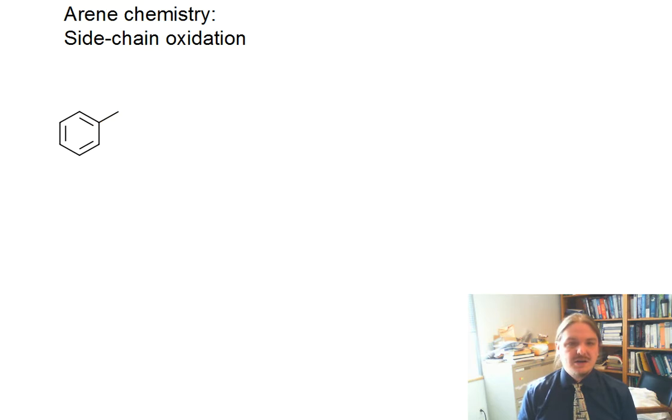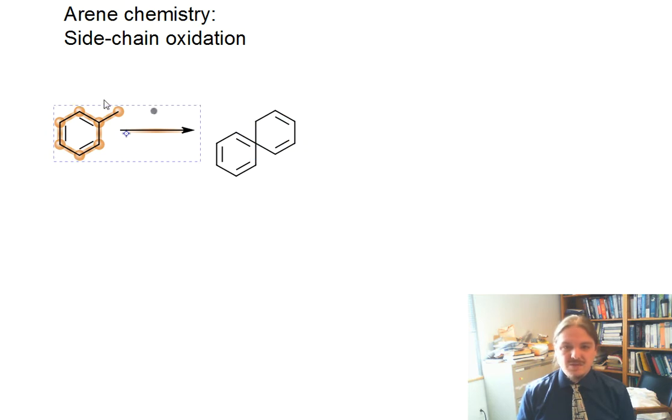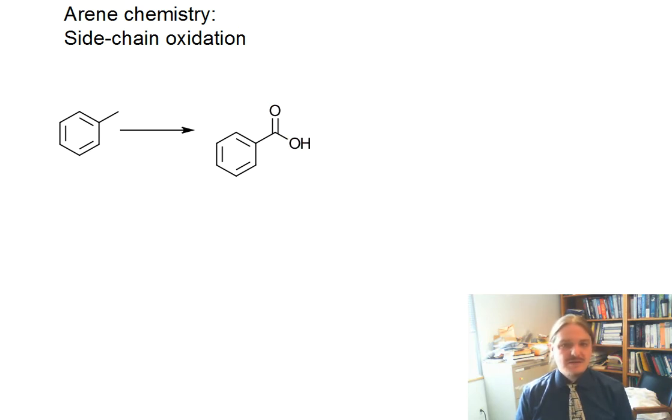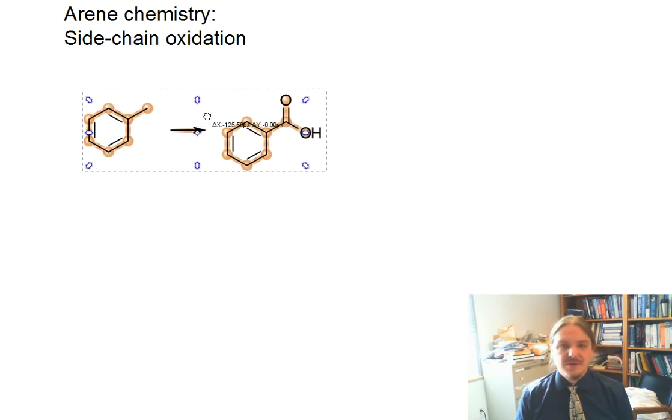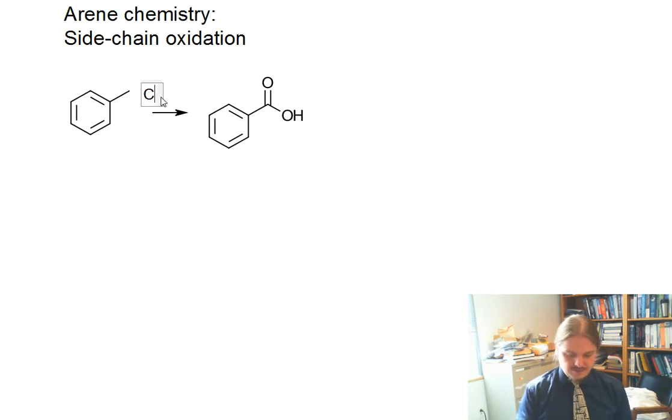So the side-chain oxidation reaction, I'm going to give you the simplest version. Here we start with toluene, and toluene reacts with certain strong oxidizing agents to form benzoic acid. For example, the chromic acid or Jones type oxidation will do this reaction.